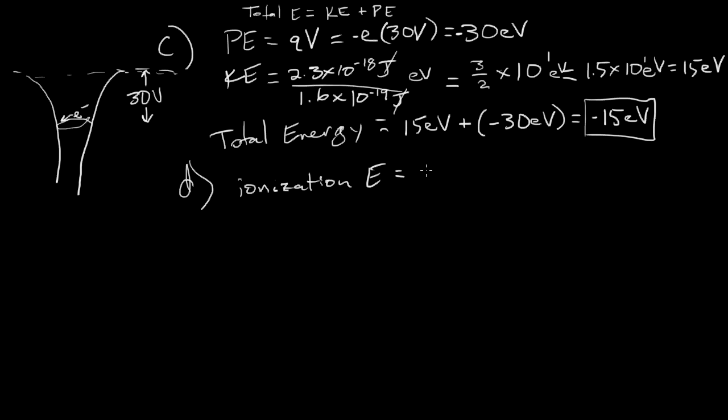It's just the same as the total energy. It's 15 electron volts. Now it's positive because the way this is defined is how much energy you need to put into the system to remove the electron from the well and have it not moving very far away from the nucleus.